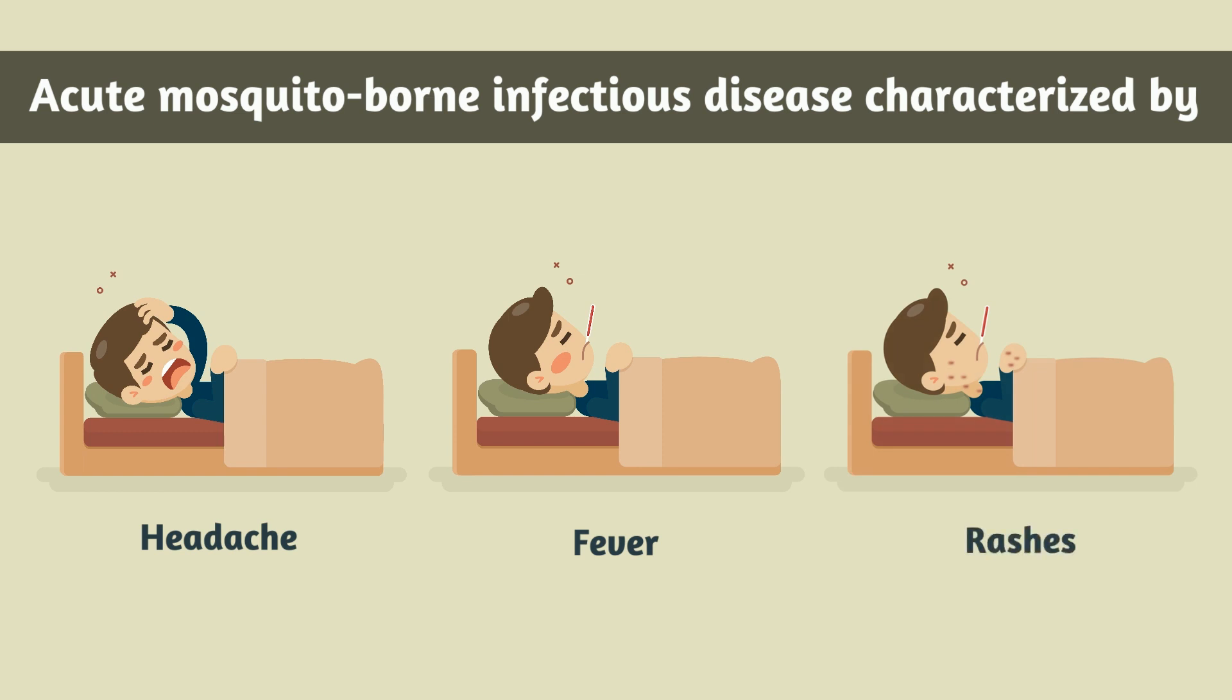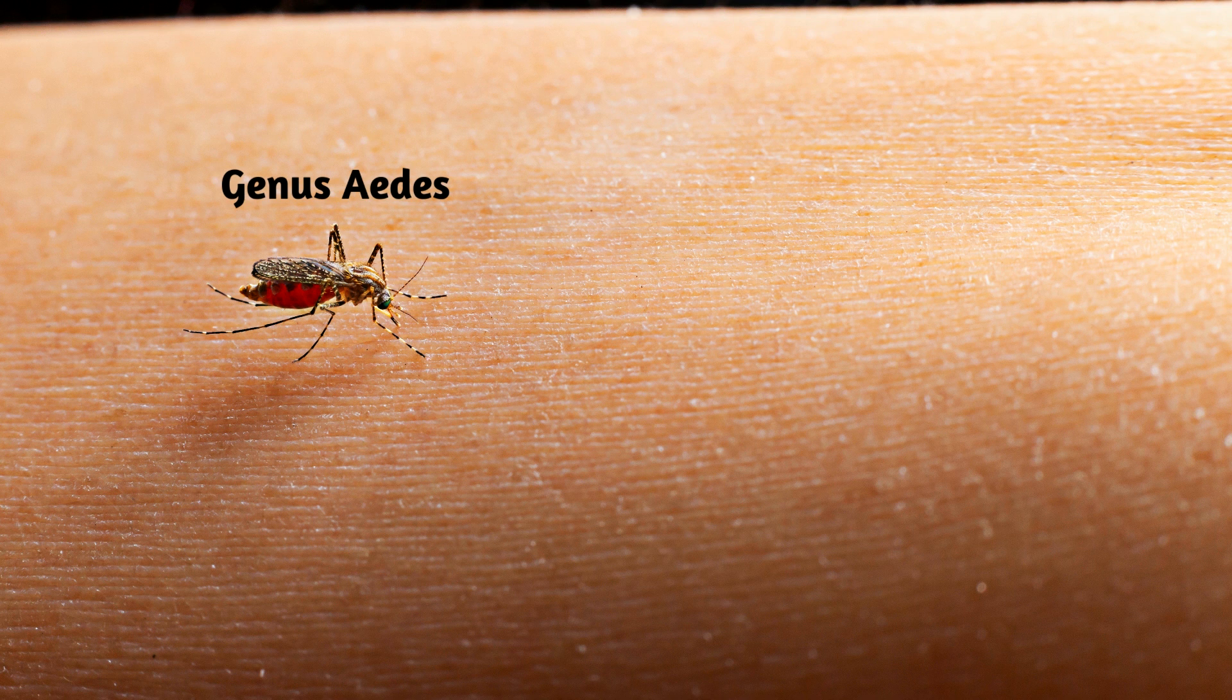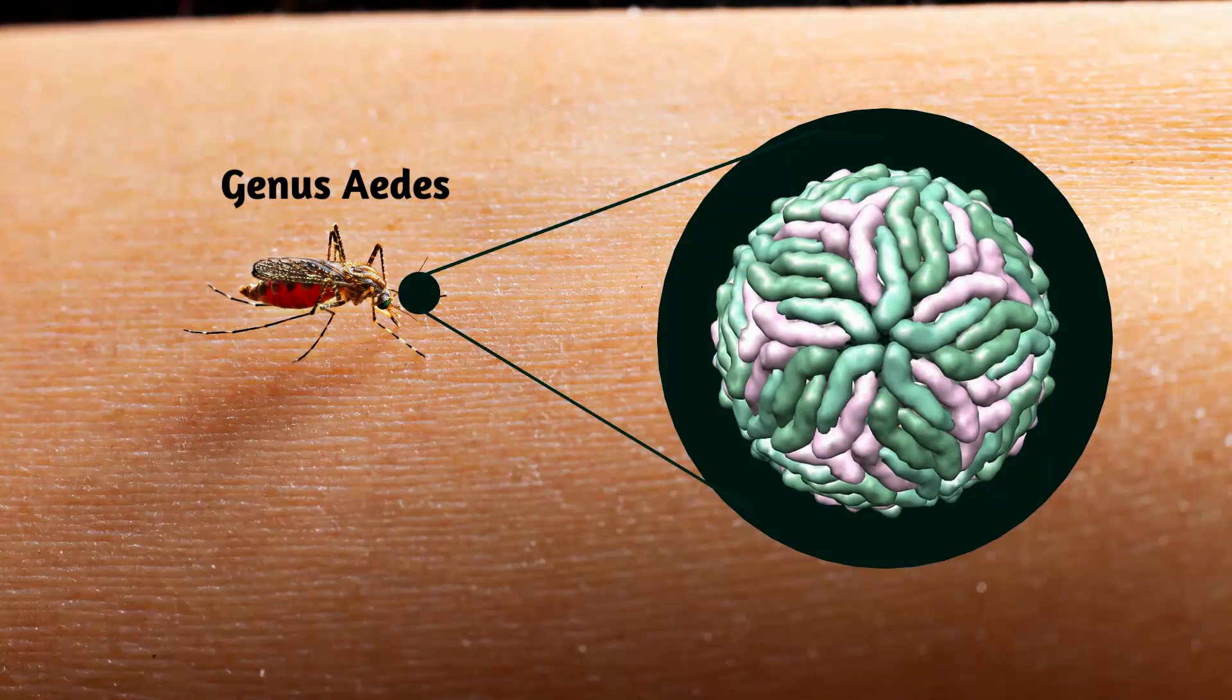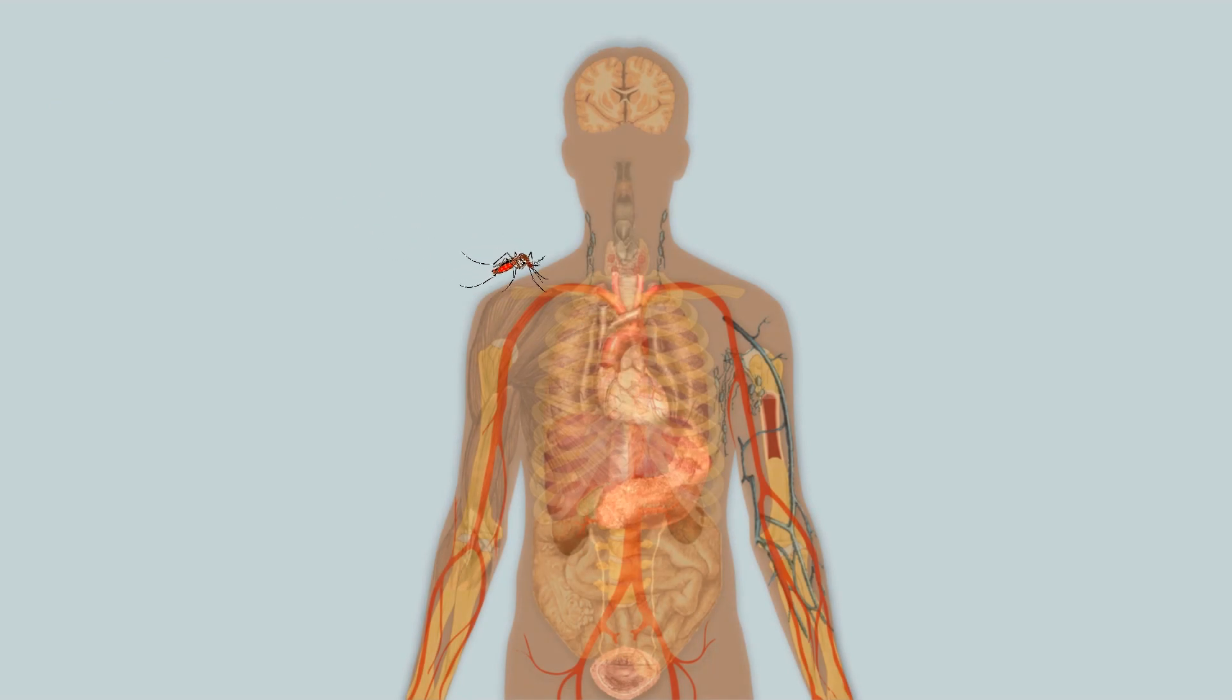It is transmitted by mosquitoes belonging to genus Aedes, containing a single-stranded RNA virus of genus Flavivirus, species dengue virus. When a mosquito Aedes aegypti bites a healthy individual, it transfers the dengue virus to the human body, causing infection.